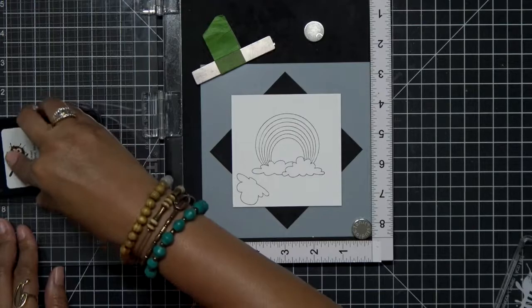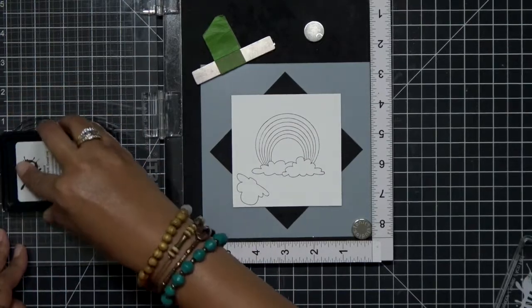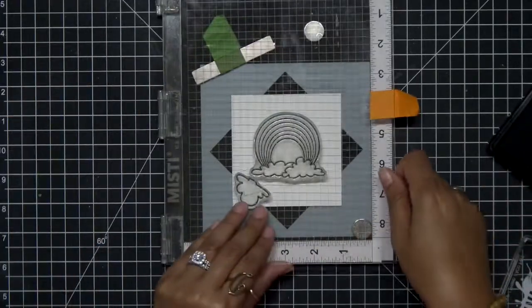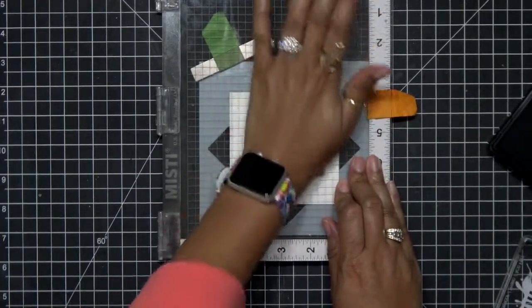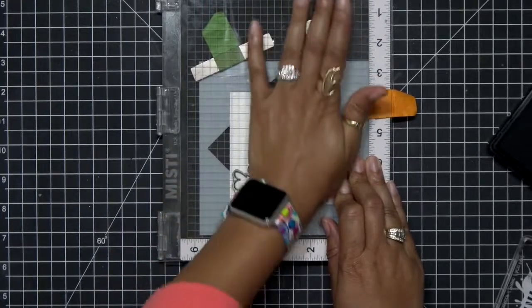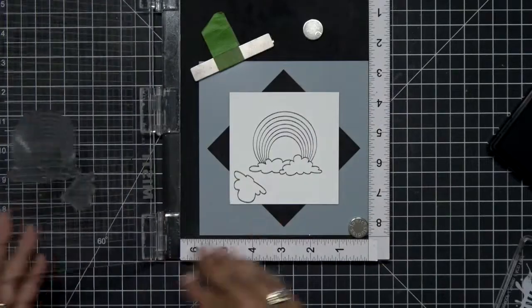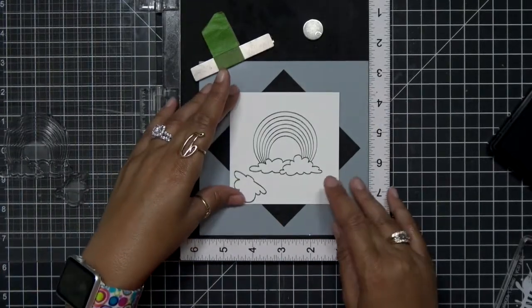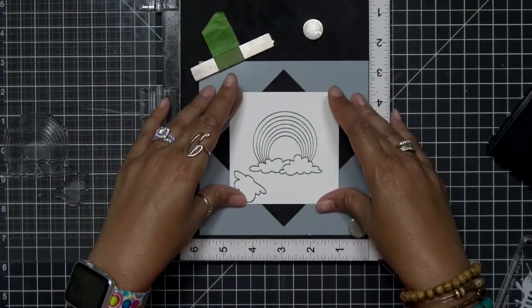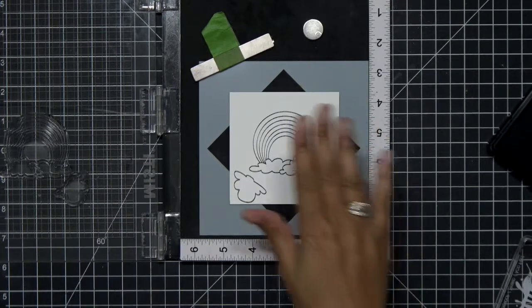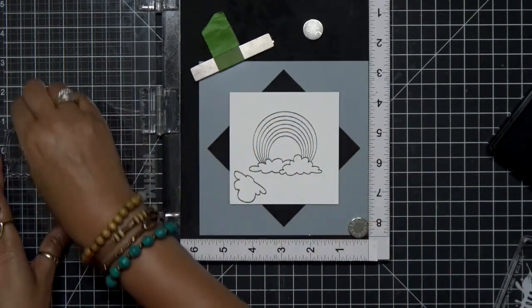I'm going to stamp the rainbow one more time because this is a newer stamp set and it still has a little bit of tackiness to it. It didn't stamp as crisp as I wanted it the first time so I'm just going to double stamp that. Now once I have that done I'm going to go ahead and remove out that rainbow because I don't need that rainbow anymore.